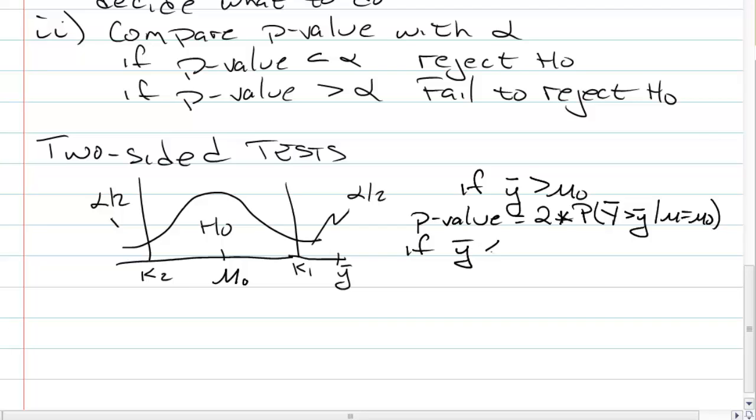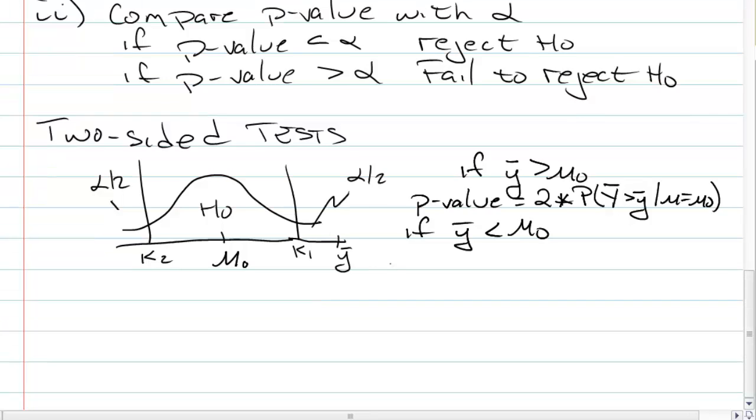If y-bar is less than the hypothesized mean, p-value, then we get the doubling, two times the probability that y-bar is as extreme or more extreme, in this case less than the y-bar, given that the null is true. So be careful with the two-sided. Remember to double your probability calculation.